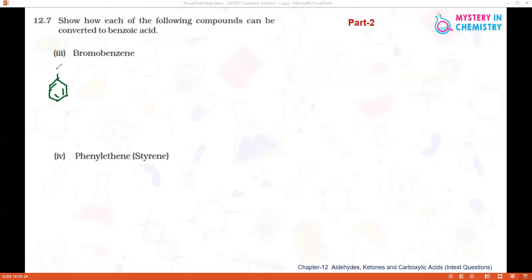First compound is bromobenzene - benzene, first carbon. This is bromobenzene and it is first converted to Grignard reagent that is phenyl magnesium bromide.